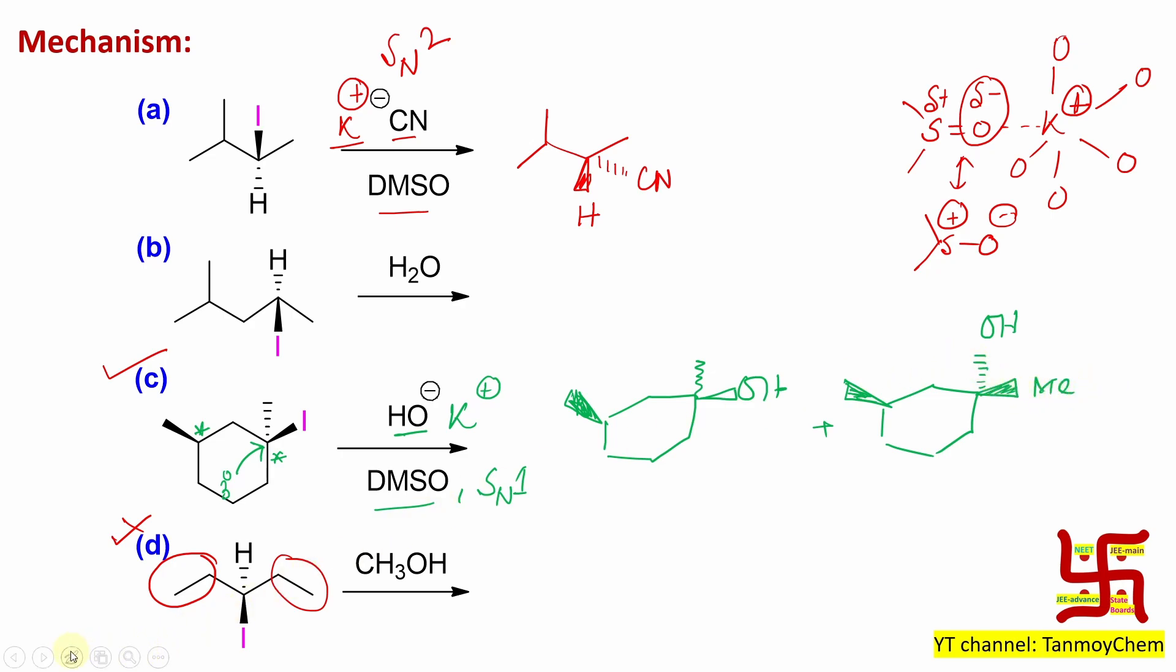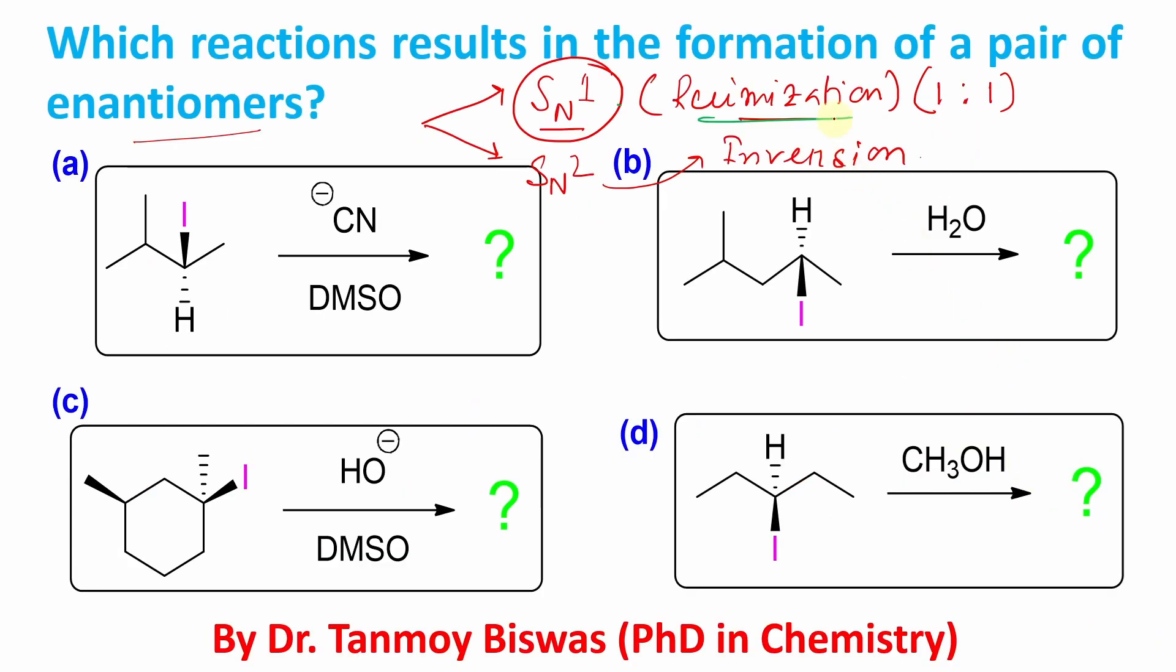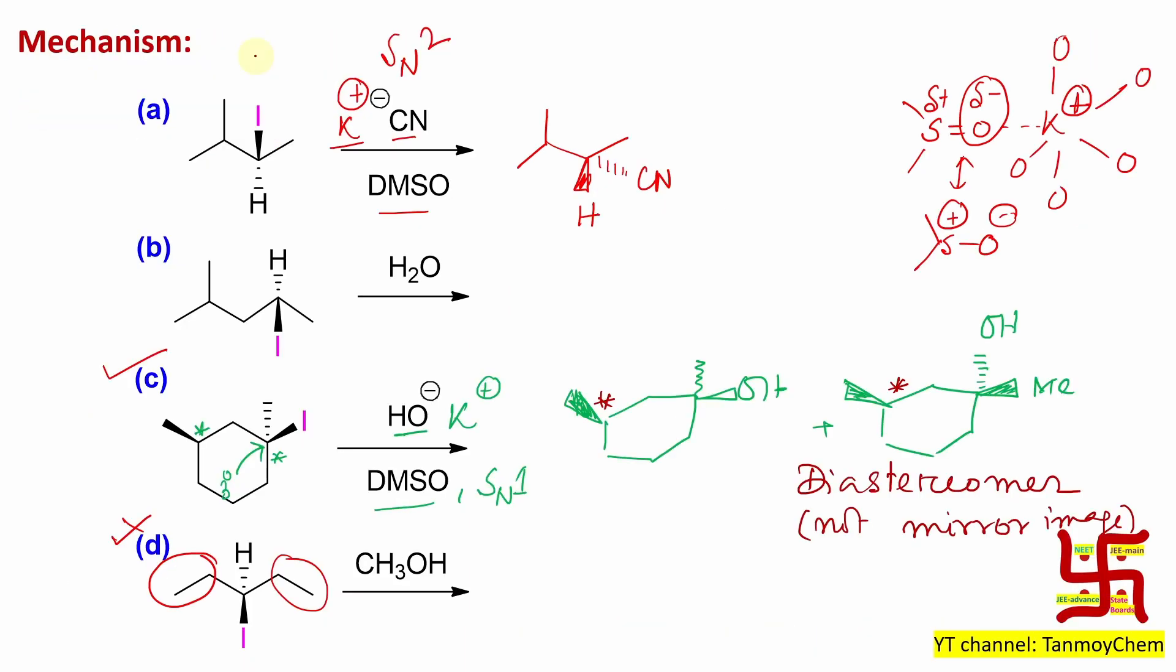But are they enantiomers? Answer is no. They are not enantiomers, students. They are diastereoisomers or diastereomers. Why? Because look at this chiral center is same for both of them. They are not mirror images. If I say enantiomers, I am talking about non-superimposable mirror images. But in this case, they are not mirror images. So according to my question, I have asked about formation of enantiomers, but here enantiomers are not produced. So this option is also gone.